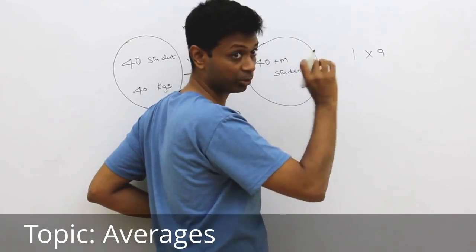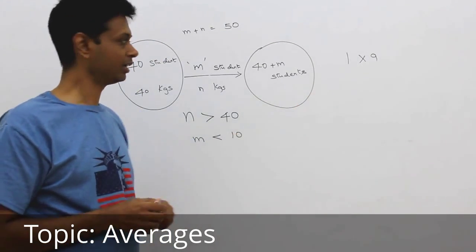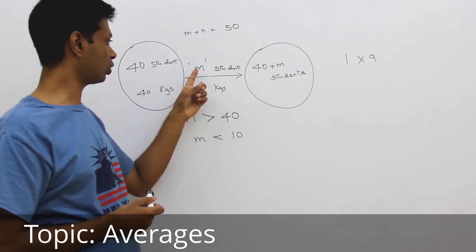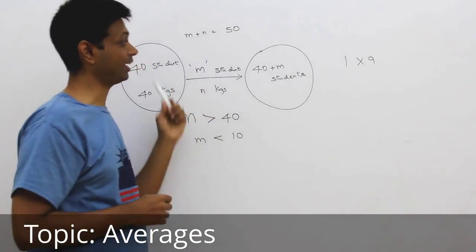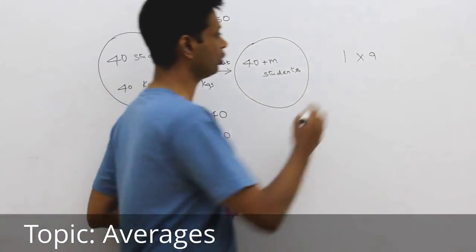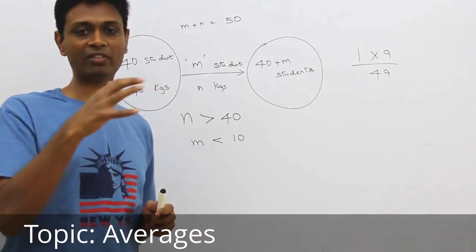The total extra weight brought in is going to get distributed over all the students that are there. There are now going to be 49 students. Because 41 kilograms each, 9 students coming in. So, 1 into 9 by 49. This is going to be the total increase in average.